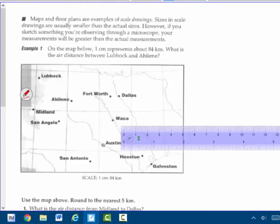Let's go to the next page. Maps and floor plans. If you looked at the building, Martha Brown's floor plan, you could see where this classroom is on the map. We have a map in our classroom. Our building's way bigger than that map. So maps and floor plans are examples of scale drawings. Sizes in scale drawings are usually smaller than the actual sizes.